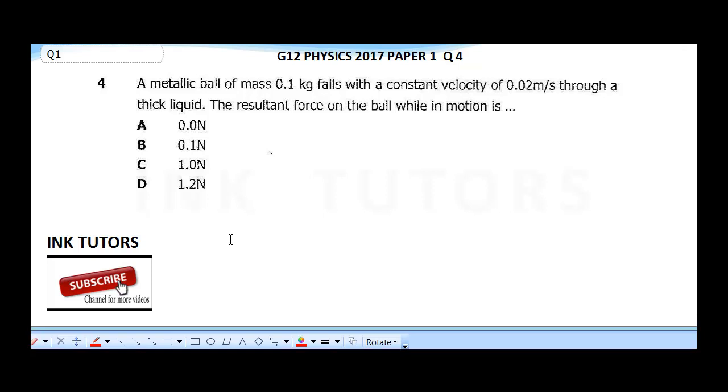The Paper 1 question: a metallic ball of mass 0.1 kg falls with constant velocity of 0.02 meters per second through a thick liquid. The resultant force on the ball while in motion is? In physics, we solve using equations. We should look for force. Force is equal to mass times acceleration. But the question said there is a constant velocity.